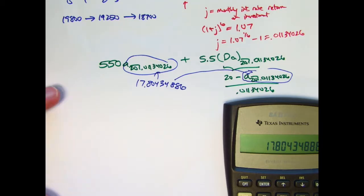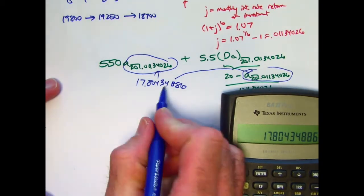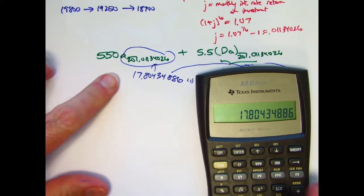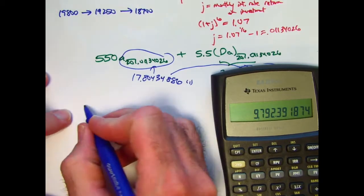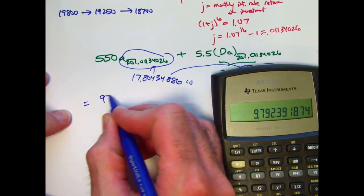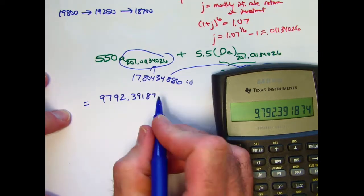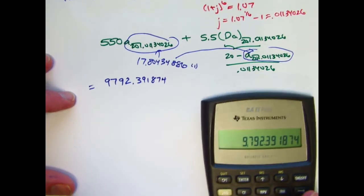Let's go ahead and multiply that by 550. Well, I'll store it in register 1. Store that in register 1. Multiply it by the 550. This part becomes 9,792.39187. Might as well go into more, I am going to round to the nearest cent at the end here.